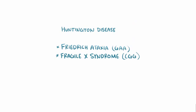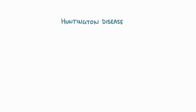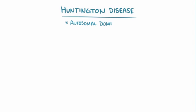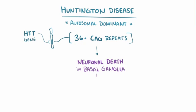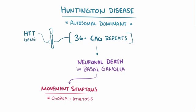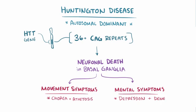As a quick recap, Huntington disease is an autosomal dominant disease caused by having 36 or more trinucleotide CAG repeats in the Huntington gene, which causes neuronal cell death in the basal ganglia, leading to movement symptoms like chorea and athetosis, as well as mental symptoms like depression and dementia.